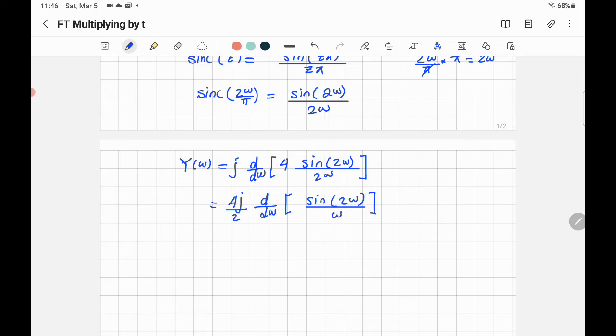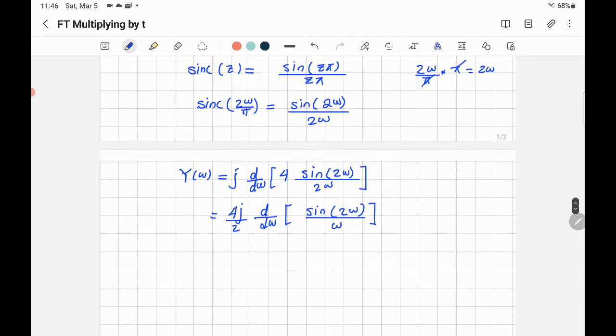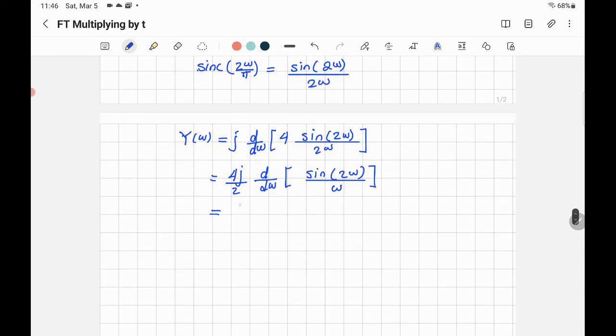How we differentiate this one? Well, that's simple. All what you're supposed to do: that's 2j and it should be equal the denominator squared. Differentiation of sine will be cosine 2 omega multiplied by 2 and multiplied by omega minus sine 2 omega multiplied by the difference of omega, which is equal to 1.